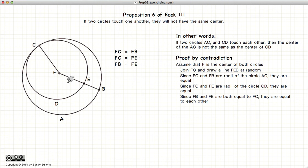But very clearly FB is going to be much larger than FE. And so here we have our contradiction. FB equals FE and FB is greater than FE.